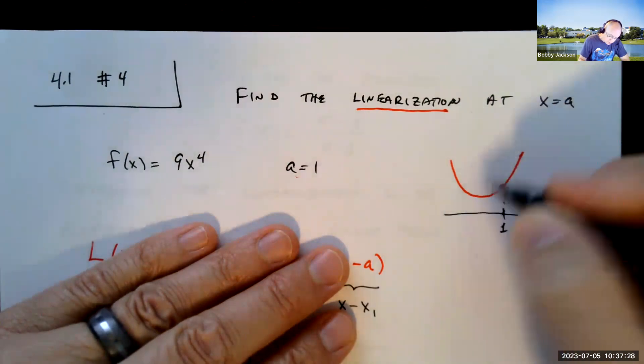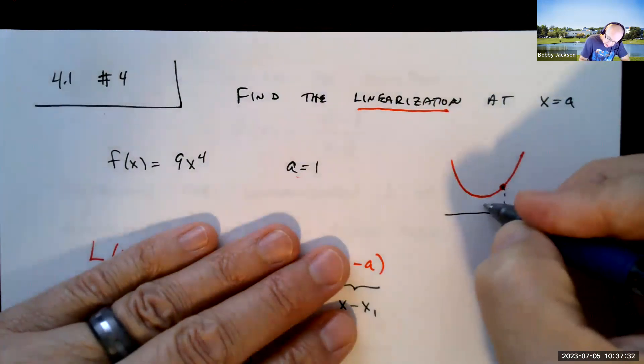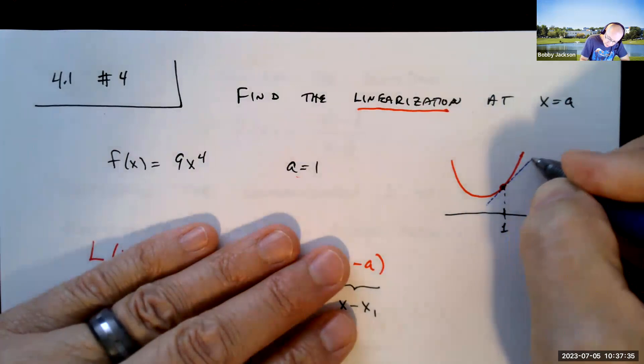with the tangent line. So imagine what the tangent line would look like. It's the line that just touches the graph at that point.